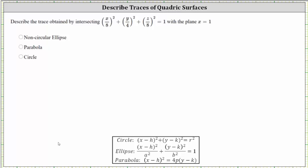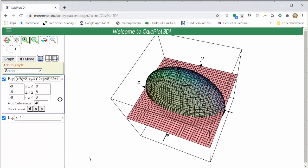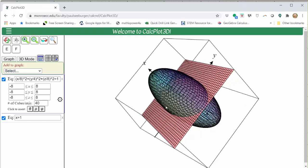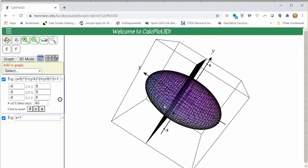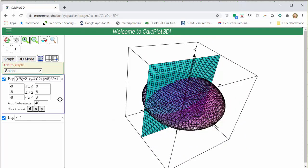Graphically, if we graph the quadratic surface and the plane x equals one in space and then look down on the x equals one plane, we can determine the x equals one trace.